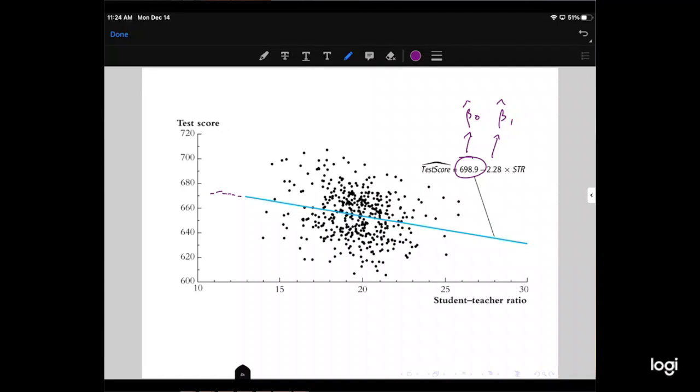We could also draw in the residuals for each of these data points. So if we have these data points, the difference between the data point and the line, the Y that would fall on that line, or the Y hats that would fall along the line, test score hats, that's what's over here, are the residuals. And that's what OLS is minimizing. So each one of these data points is associated with a residual. We could draw in the residuals for all of these, but it would get kind of messy. And again, what OLS is doing is it's adjusting the slope and the intercept of this line until those residuals are minimized.